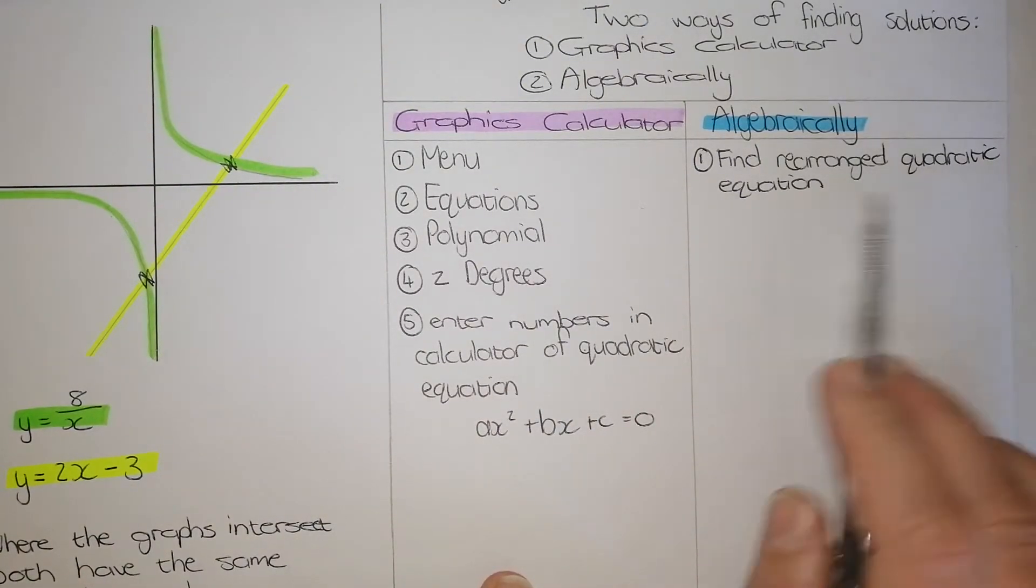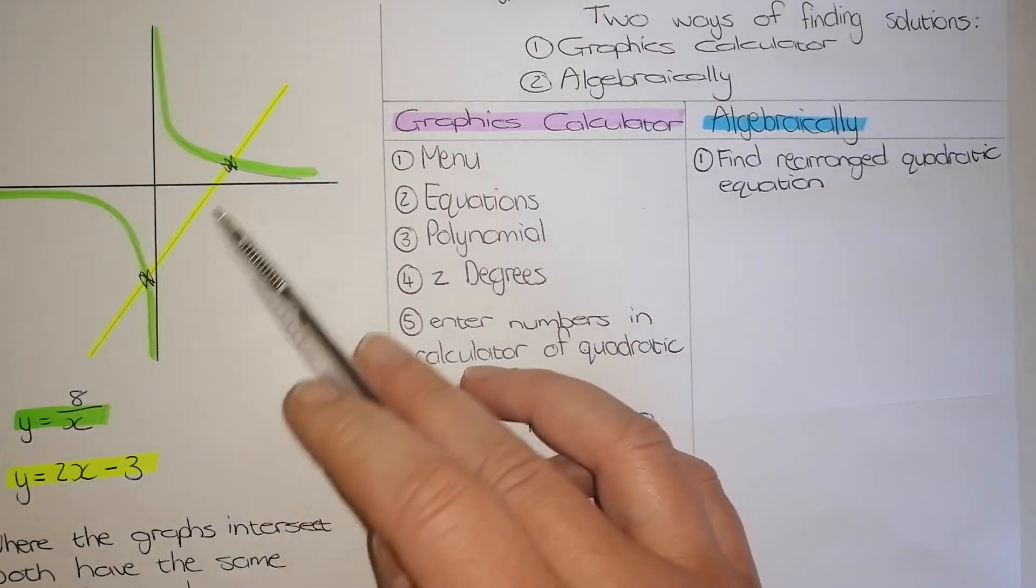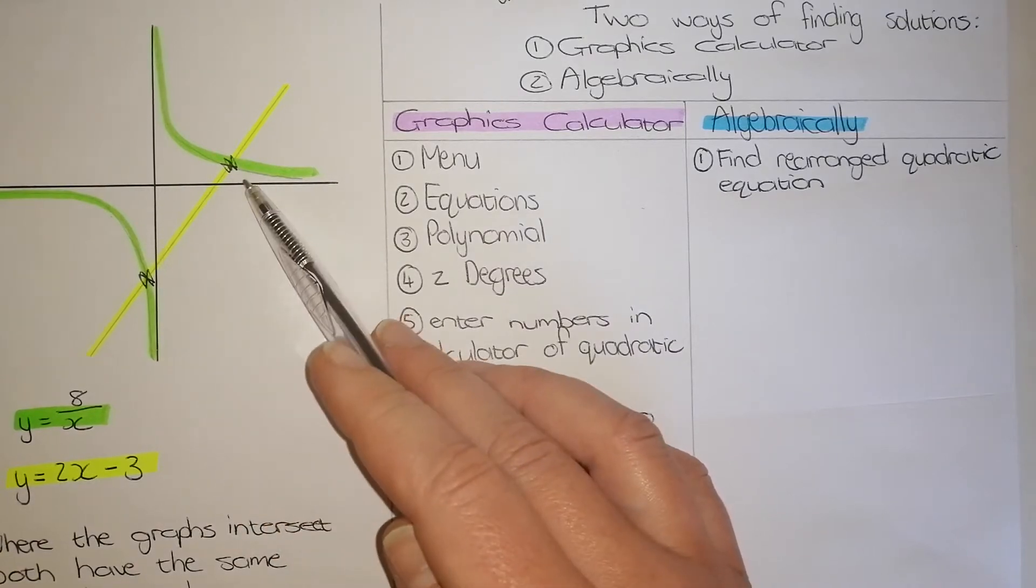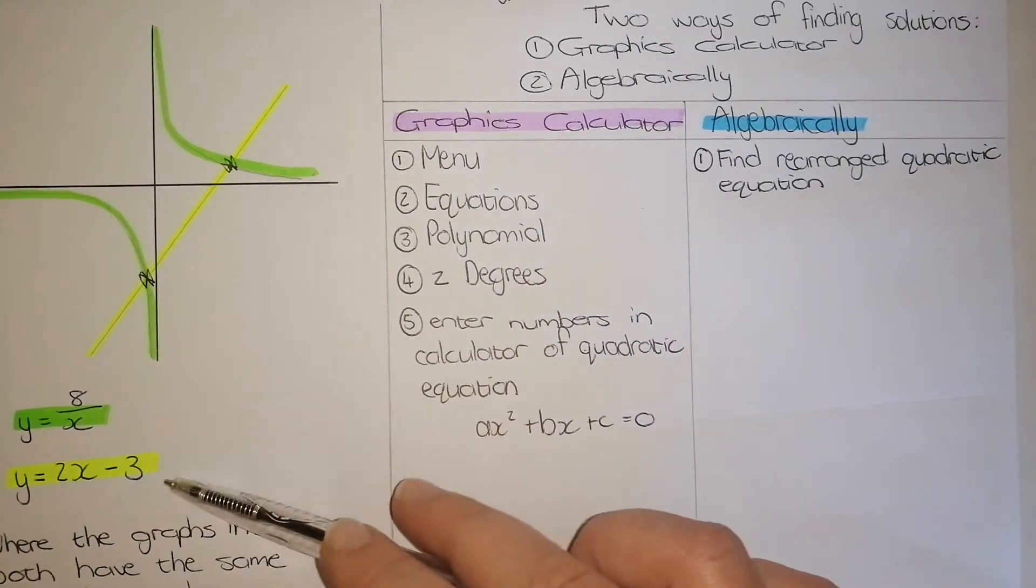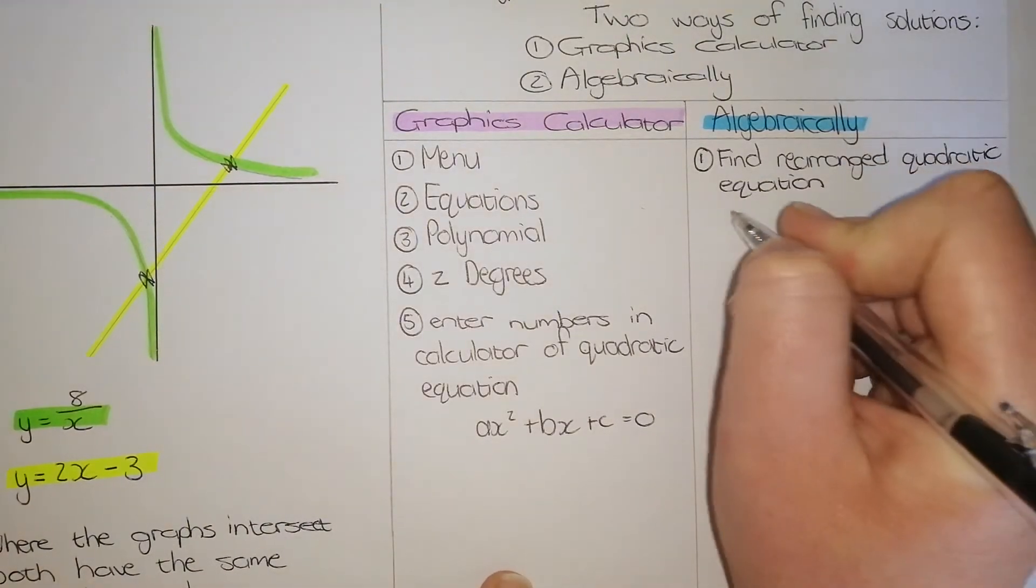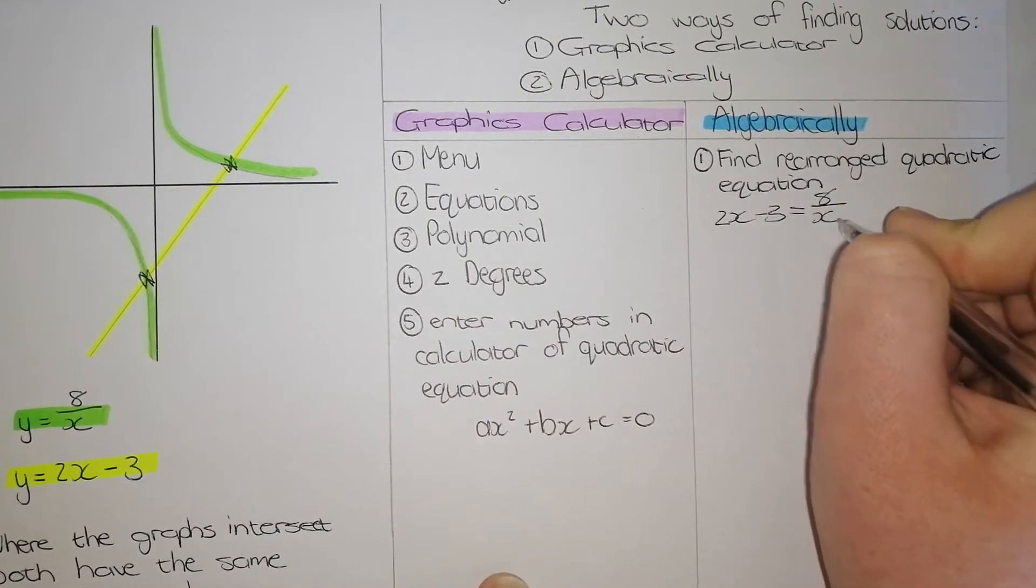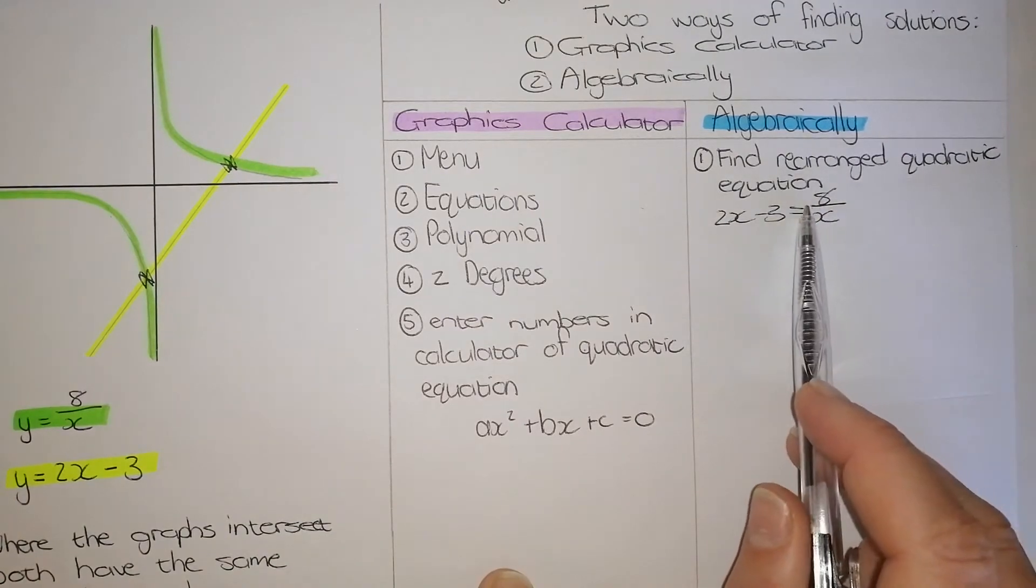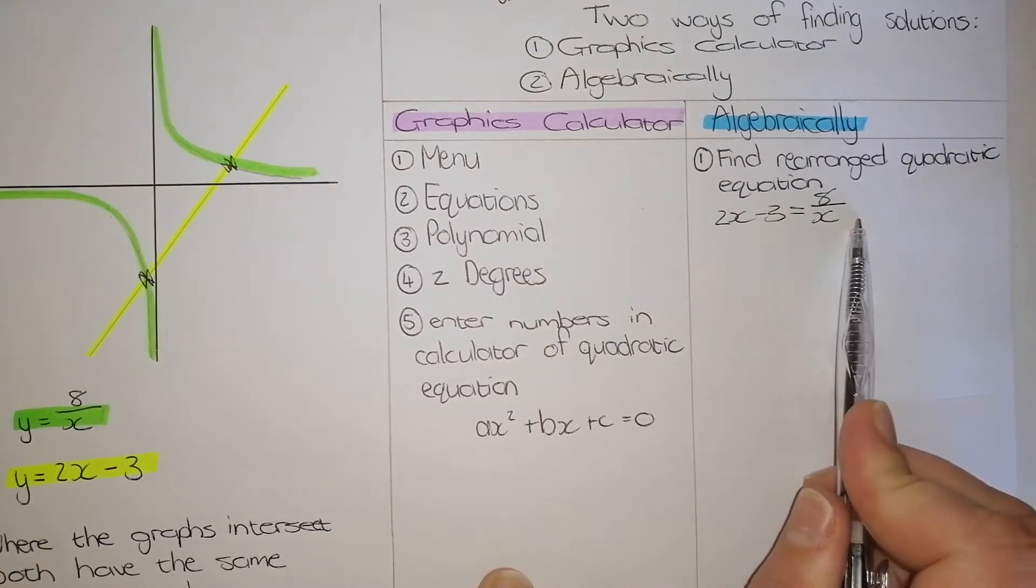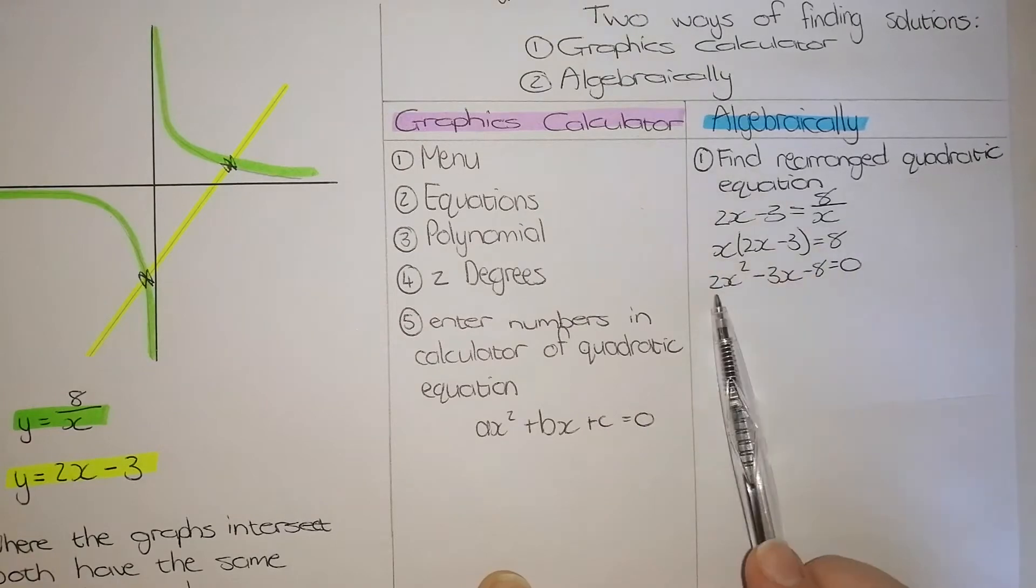The first step is find and rearrange the quadratic equation. So what that means is we need to find the points of intersection or the quadratic equation for that. And we know that at those points, my x and y values are the same. Therefore, we're going to put the y side of my equation of both equations equal to each other. So we're going to start with 2x minus 3 is equal to 8 over x. Now we need to rearrange this to be sure that we can find a quadratic equation. We do not want to work with fractions, so we need to get rid of this x. The way we do that is we multiply it. So we multiply on the right as well as on the left.